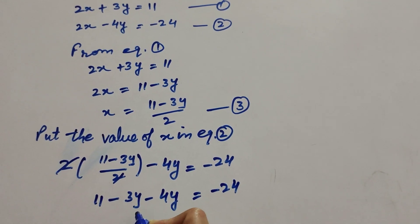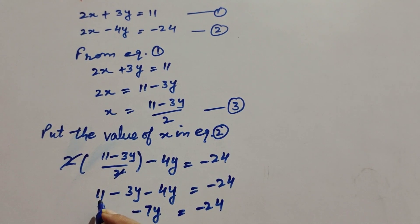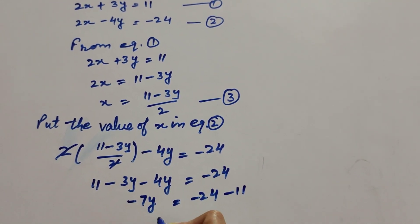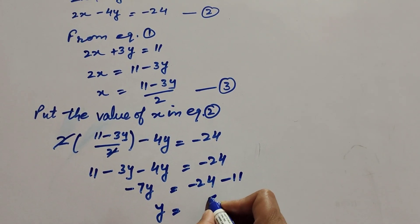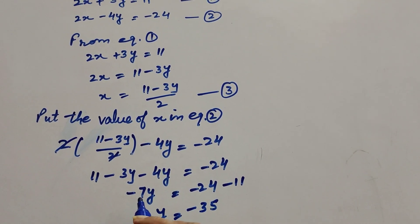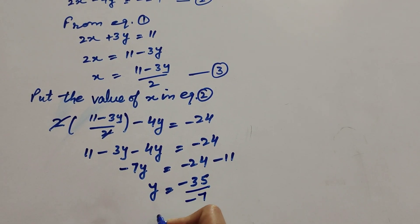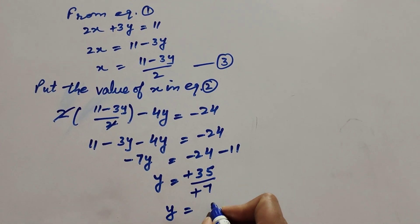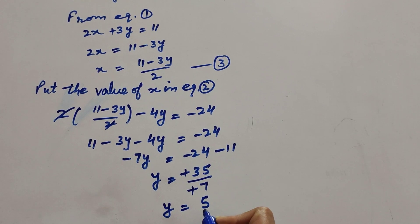Combining like terms: minus 3y minus 4y equal to minus 7y. So 11 minus 7y equal to minus 24. Transposing 11 to the right hand side gives minus 7y equal to minus 24 minus 11, which is minus 35. Dividing both sides by minus 7, the negatives cancel, so y equal to 35 divided by 7, giving y equal to 5.